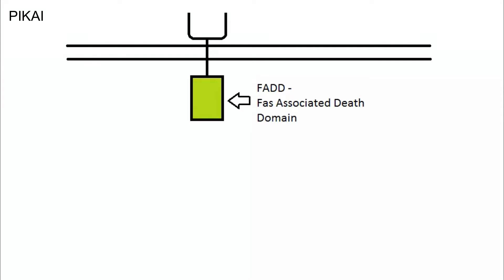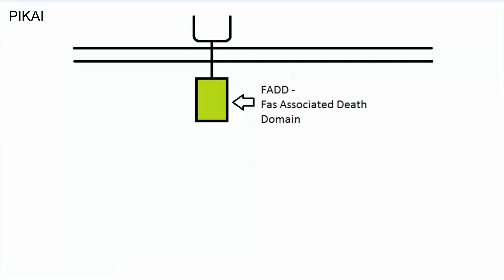Upon signals from an external source, lymphocytes — mostly T lymphocytes and NK cells — carry this FAS ligand. The FAS ligand attaches to a receptor on the target cell's surface. These receptors detect the FAS ligand and the extrinsic pathway begins.